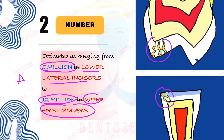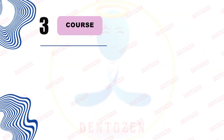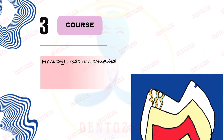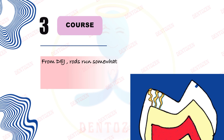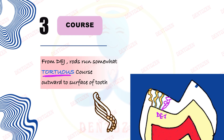Third is the course of the rods. Enamel rods starting from the dentino-enamel junction, as they go towards the outer surface of the enamel, take many bends. They do not run a straight course. This special course is given the term tortuous course — an important viva question. The course of enamel rods is tortuous, meaning with many bends.